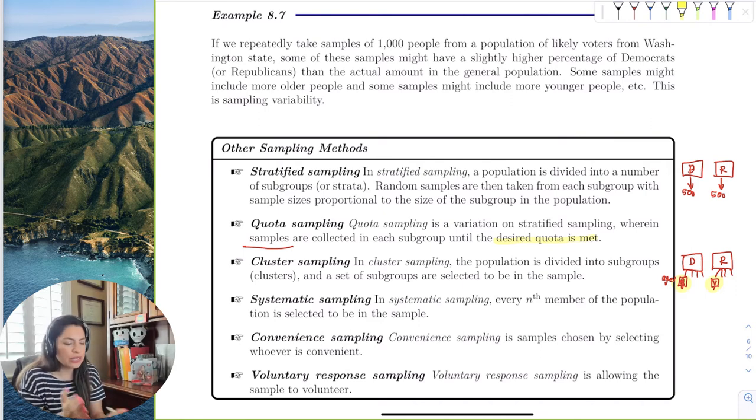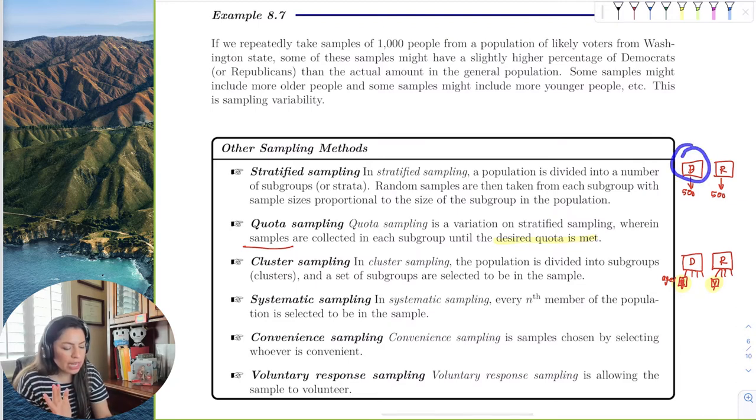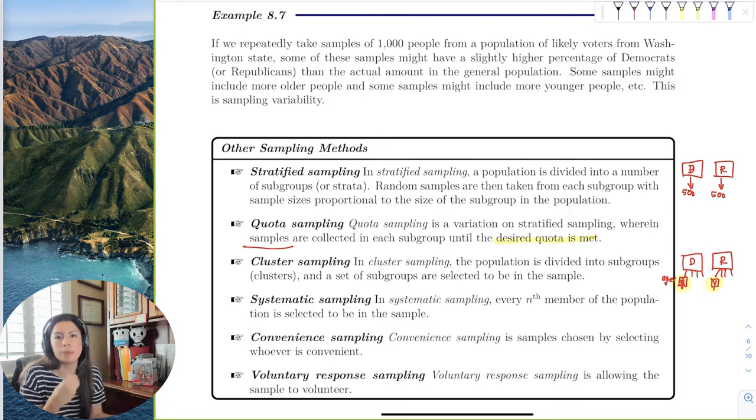Whereas with Stratified, you were taking subgroups, but just taking random subjects from those subgroups. Here, you're taking, you're splitting them into groups, and the subgroups that you have, you randomly select that group, entire group.